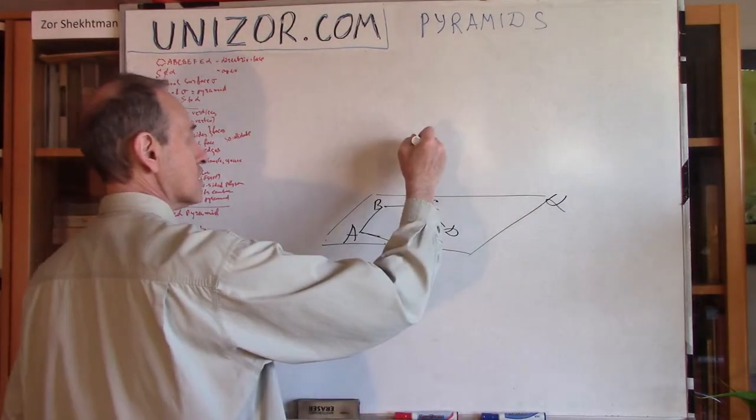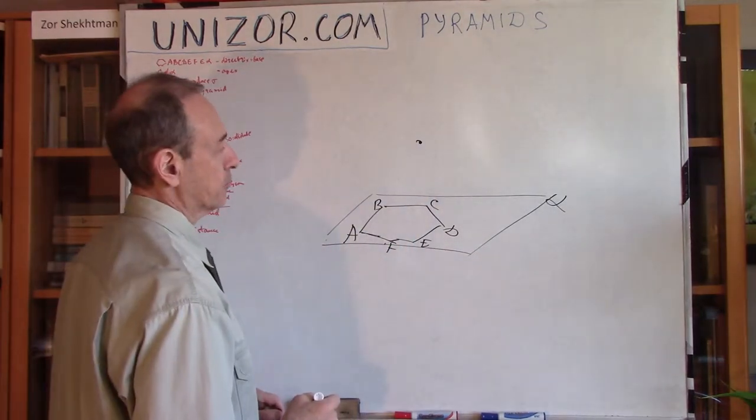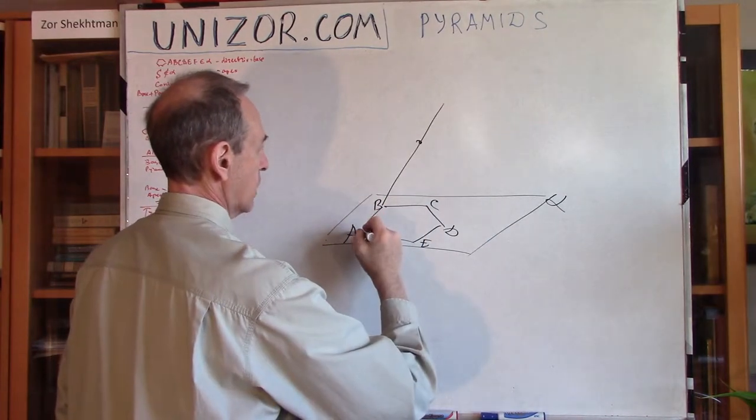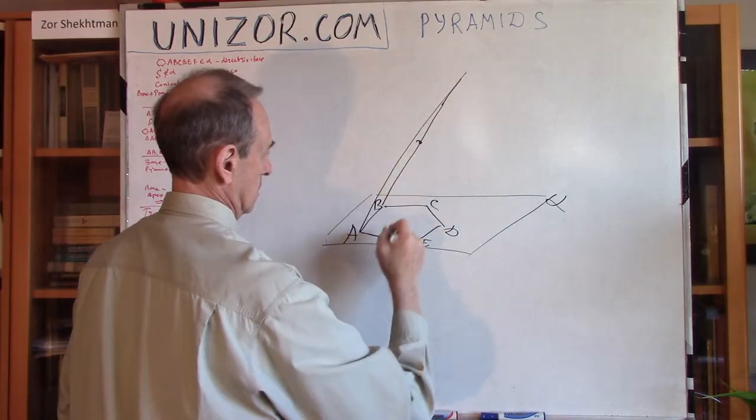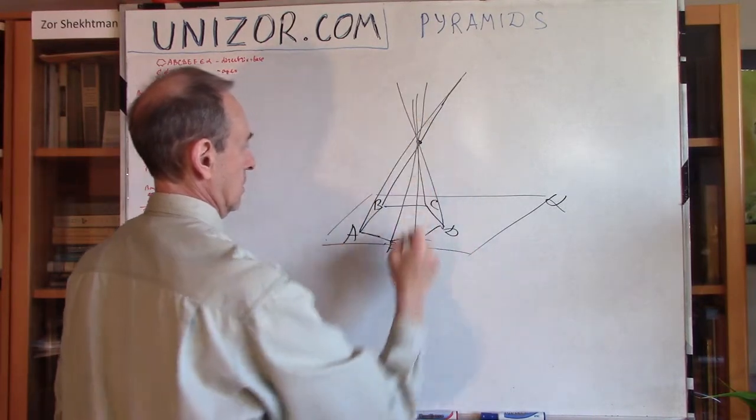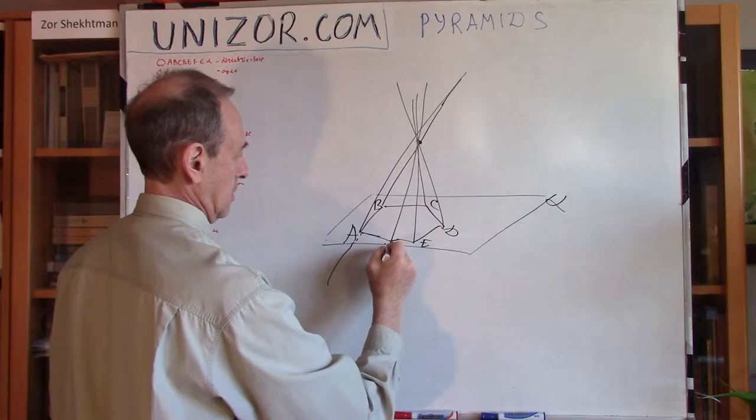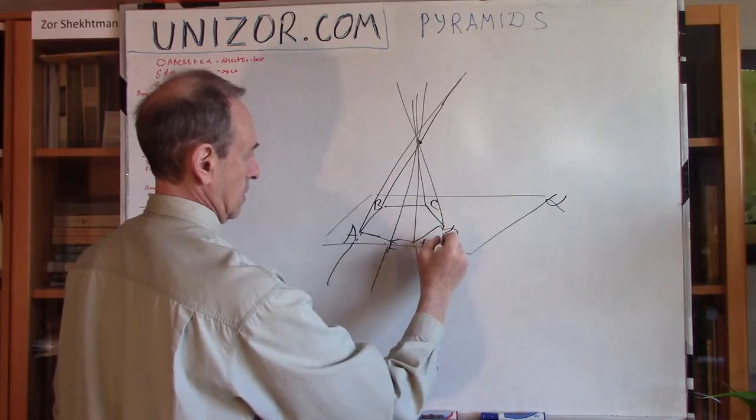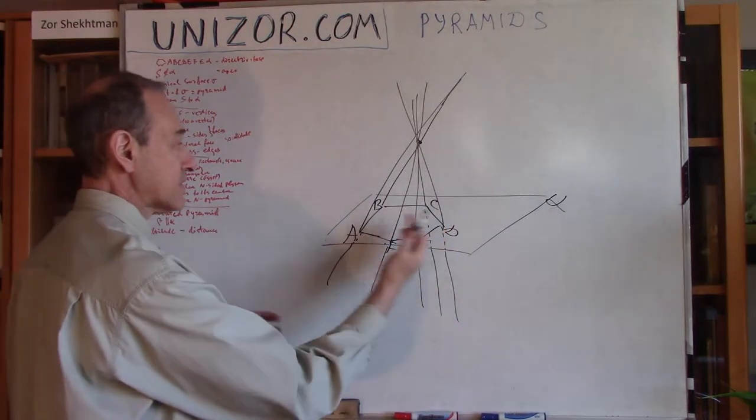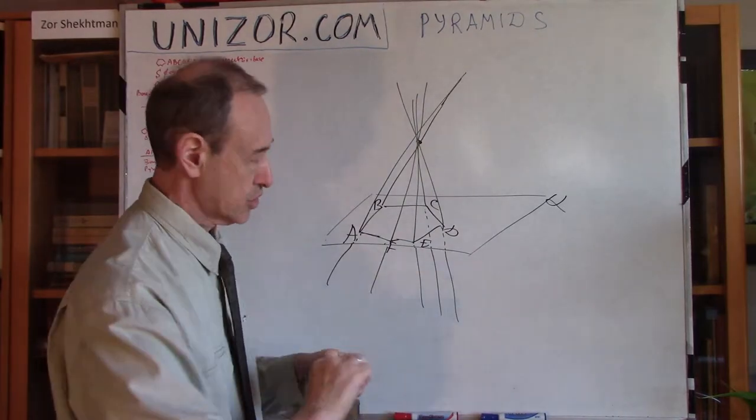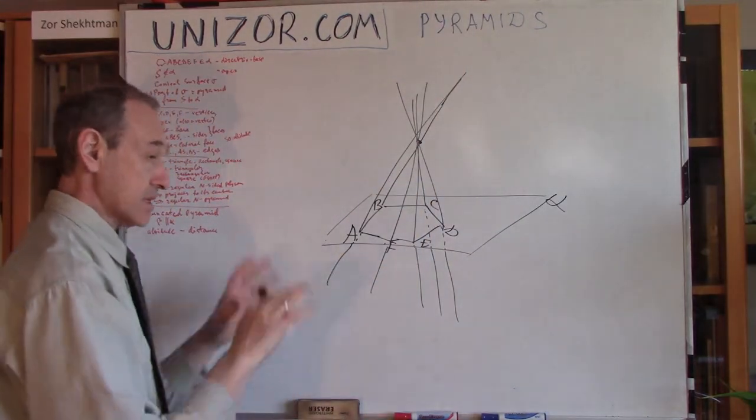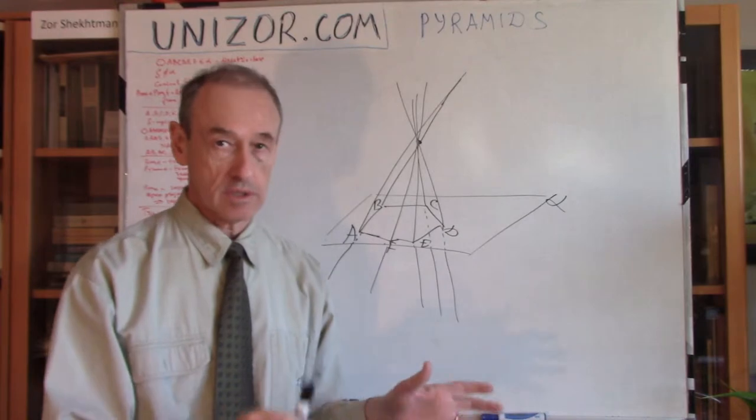Now, we choose some apex outside of this plane, A, and connect each point with an apex. So, we will have some kind of a conical surface, which contains like two parts, before the apex and after the apex. Okay, so this is the beginning of my constructing the pyramid.